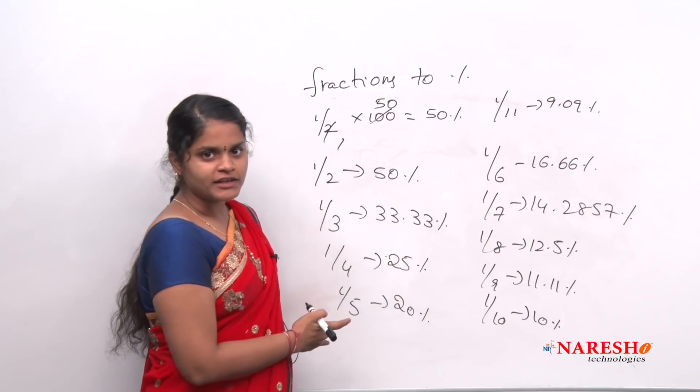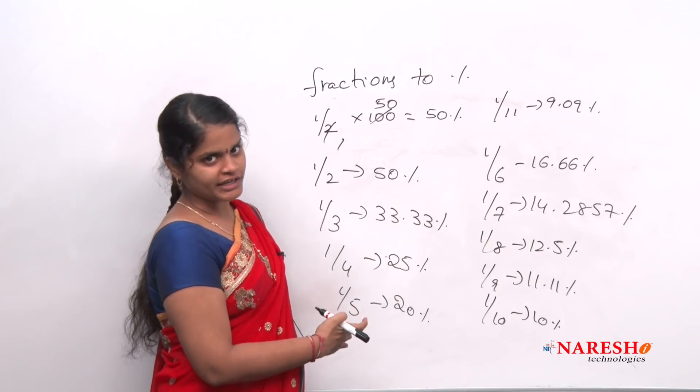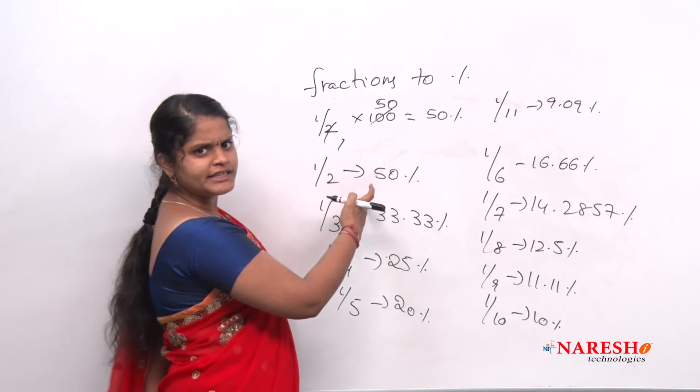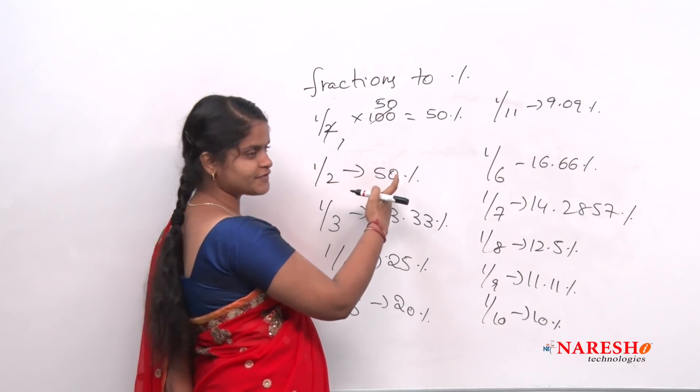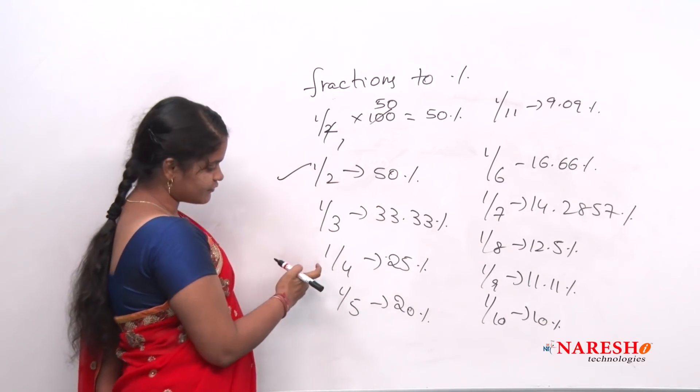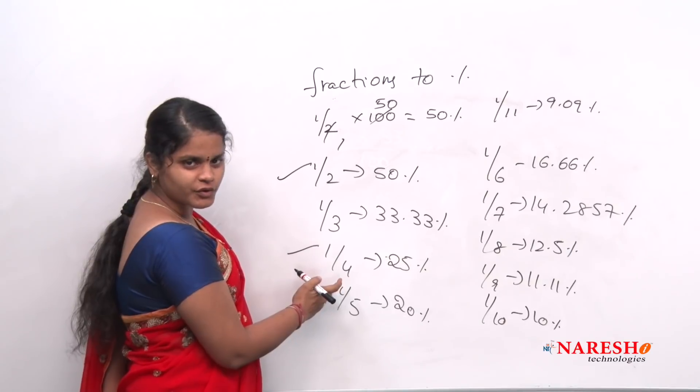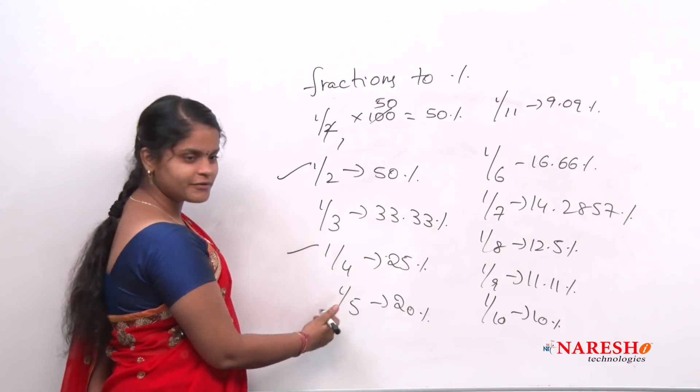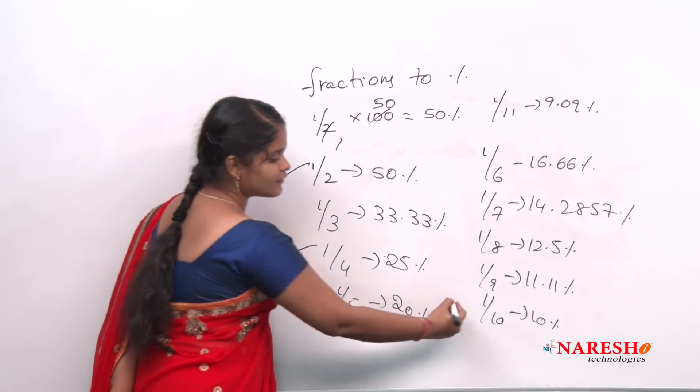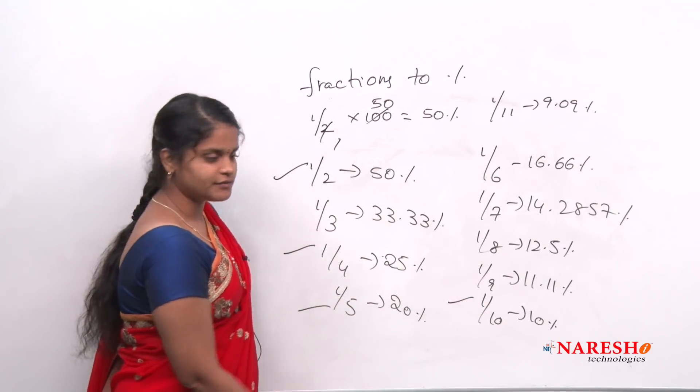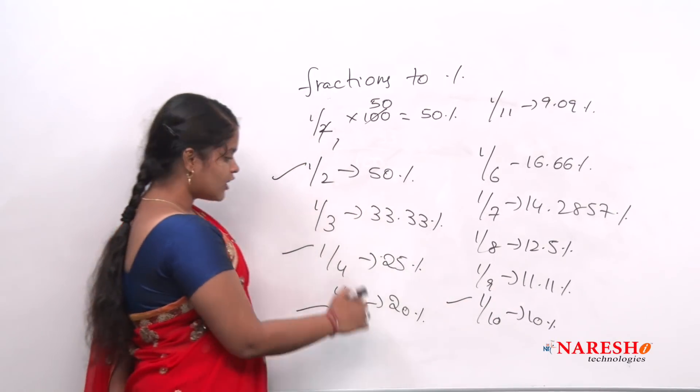You are supposed to remember these values in order to solve problems in a more easy manner. See, 1/2 is easy, 100 by 2, it is 50 percent. This is very easy. And 1/4, 100 by 4, 25 percent. 1/5 is also easy, 20 percent. 1/10 is also easy, right? 10 percent. Now let us see.